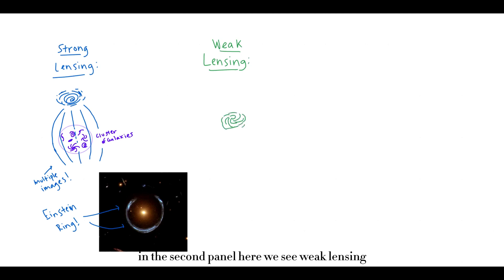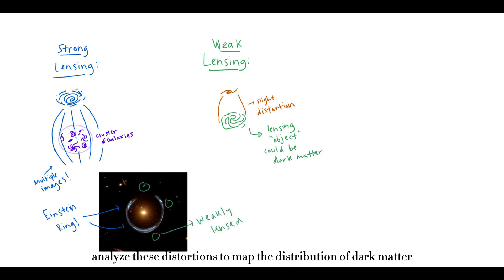In the second panel here, we see weak lensing. This is more subtle. Instead of obvious arcs, weak lensing slightly distorts the shapes of galaxies in the background. Astronomers usually analyze these distortions to map the distribution of dark matter. Lastly, we have microlensing. This happens on smaller scales, like when a star or a planet acts as a lens. That's a story for another day. Today we're sticking to the big stuff.